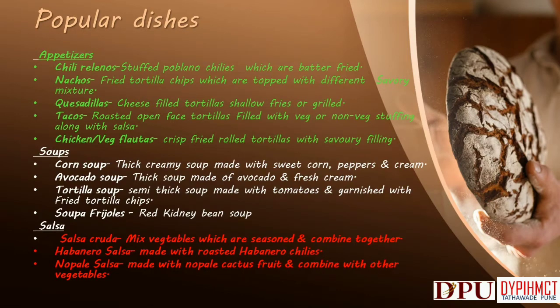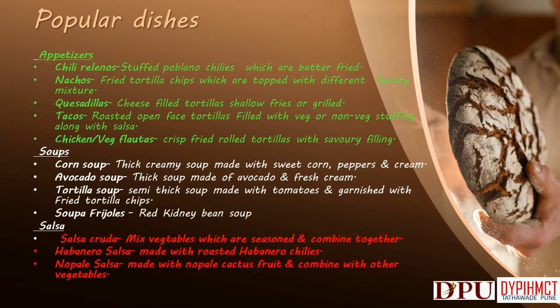Popular dishes from Mexico — Appetizers: Chile Relleno — stuffed poblano chilis which are batter-fried. Nachos — fried tortilla chips topped with different savory mixtures. Quesadillas — cheese-filled tortillas, shallow-fried or grilled. Tacos — roasted open-faced tortillas filled with veg or non-veg stuffing along with salsa. Chicken or veg flautas — crisp fried rolled tortillas with savory filling. Soups: Corn Soup — thick creamy soup made with sweet corn, peppers and cream. Avocado Soup — thick soup made of avocado and fresh cream. Tortilla Soup — semi-thick soup made with tomatoes and garnished with fried tortilla chips. Sopa de Frijoles — red kidney bean soup. Salsas: Salsa cruda — mixed vegetables seasoned and combined together. Habanero salsa — made with roasted habanero chilis. Nopal salsa — made with nopal cactus fruit combined with other vegetables.